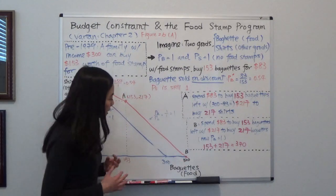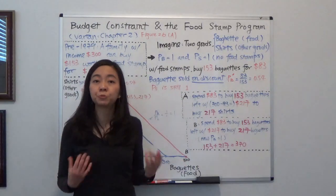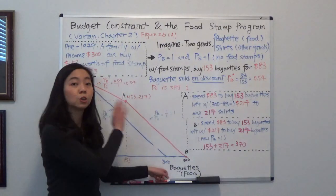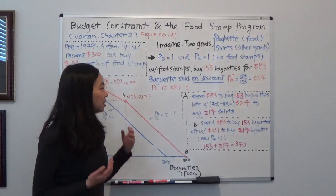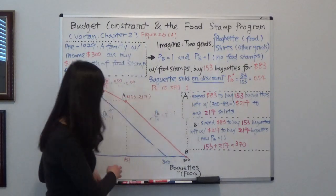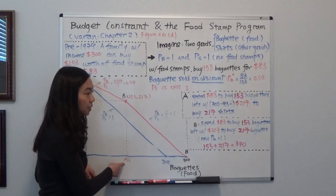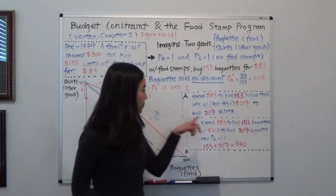So the intercept here, that means you use all the money, all the resources to buy baguettes and no t-shirts. So in that case, how many baguettes can you buy? So you know, for the first 153 baguettes, you bought them on discount and you spend $83.